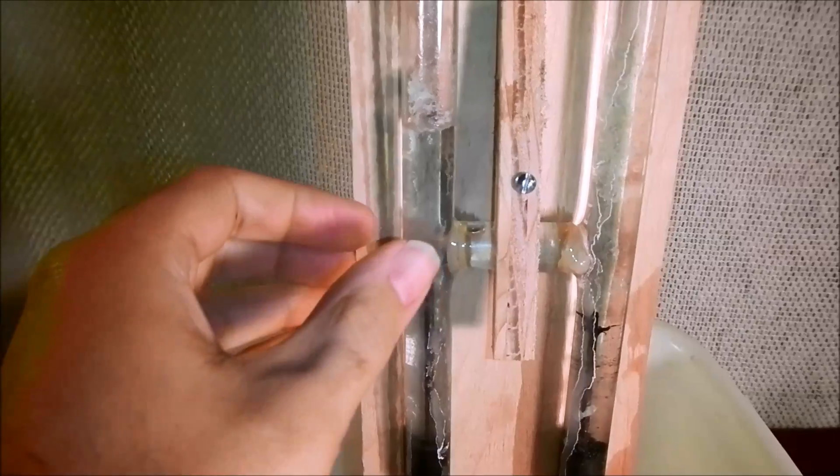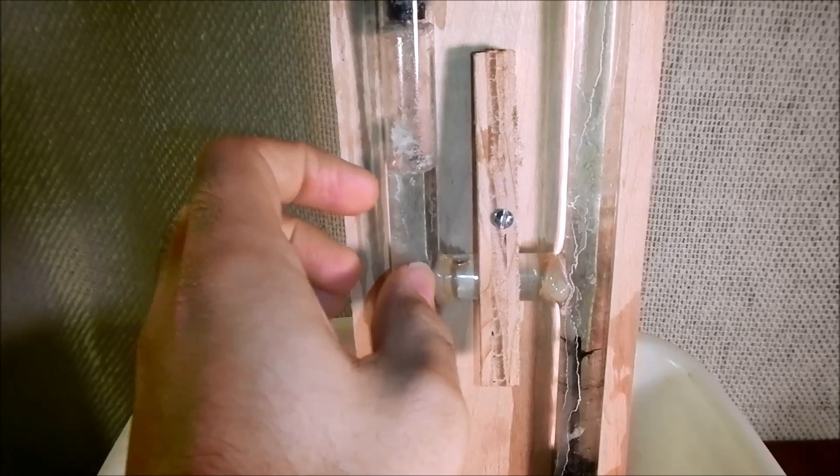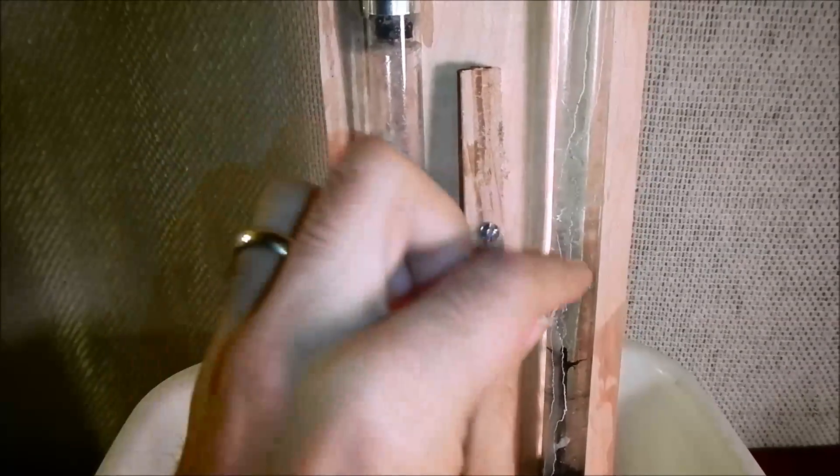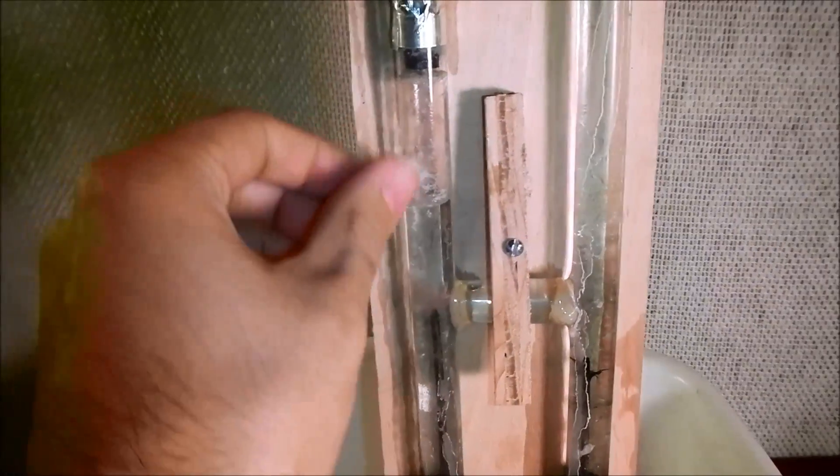I used a blowtorch to blow a hole in the sides of the rods, and then I cut a piece of tubing and I epoxied it here and here to form my H.